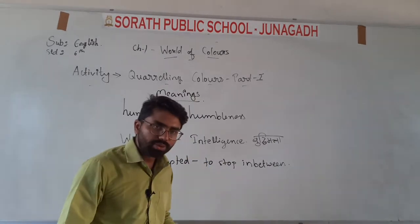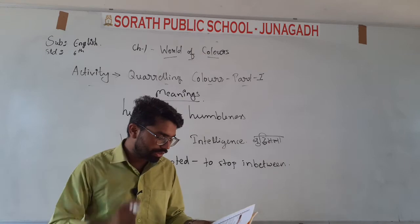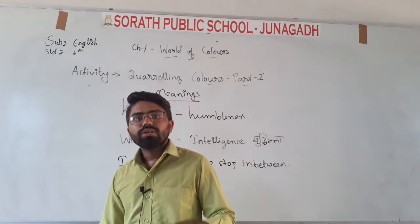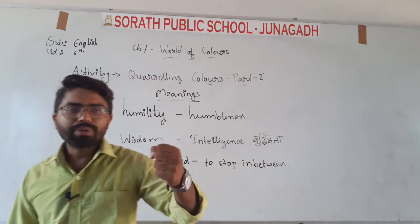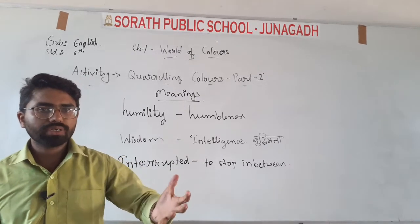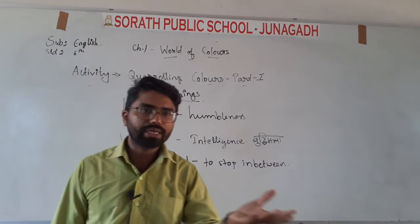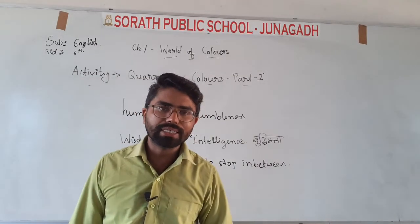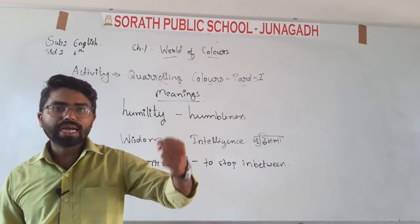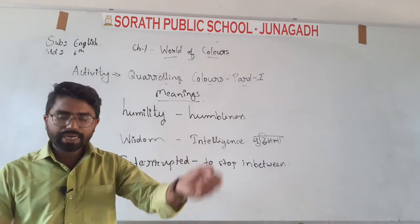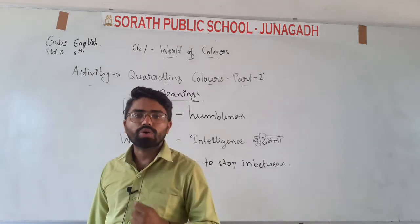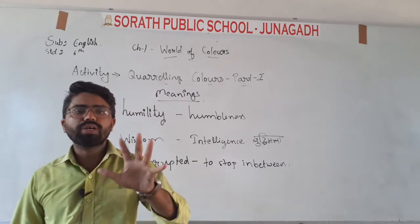Then red shouted and said: 'I am the sign of strength and authority.' Strength belongs to red, and authority — like in any company where different authorities handle different work — is also represented by red. So red claimed: 'I have more importance than all of you.' All these colors were showing their importance to each other and quarreling in the sky.